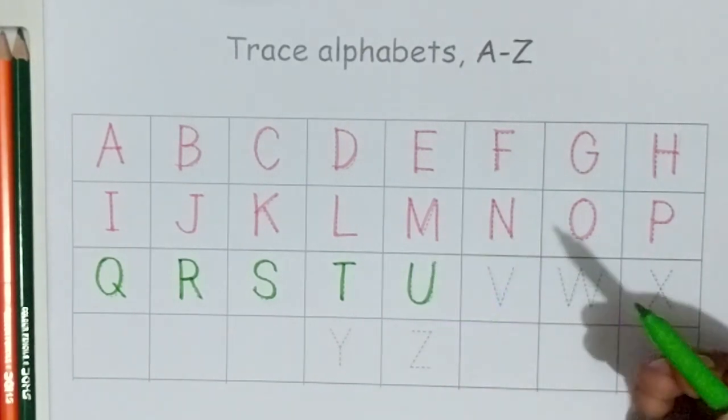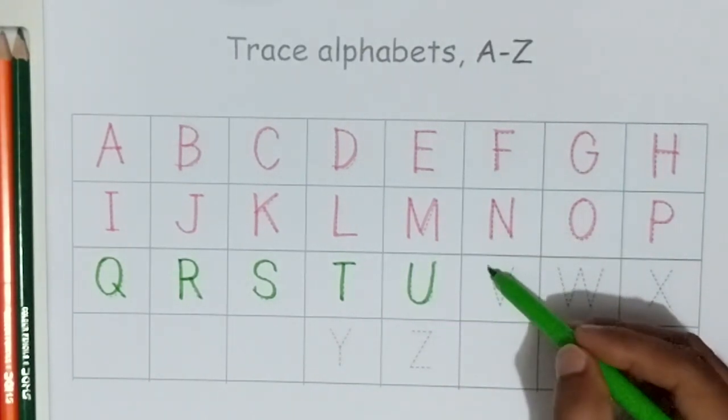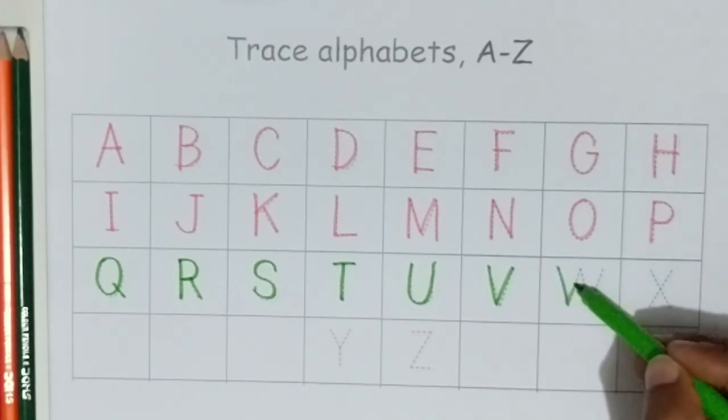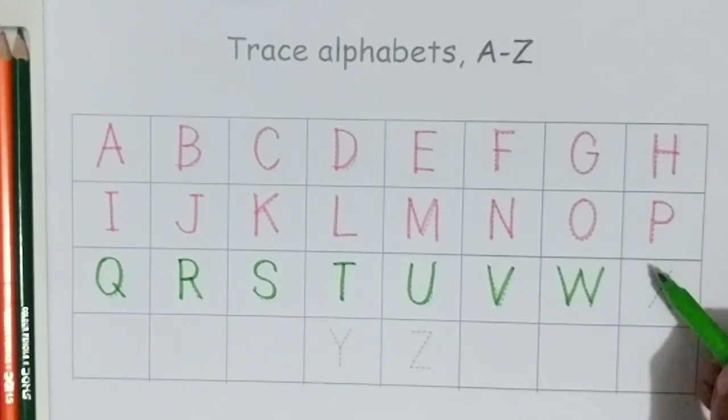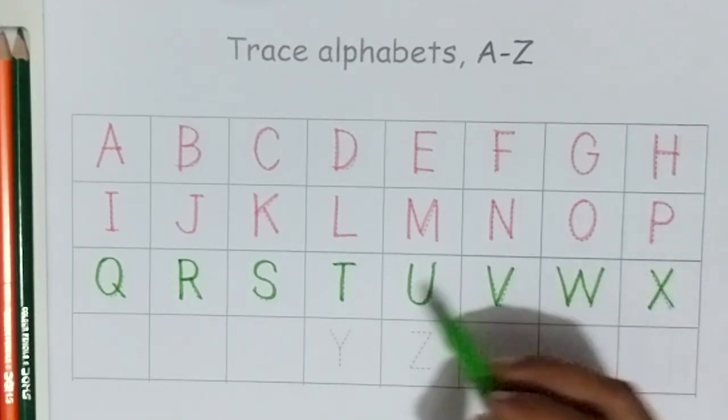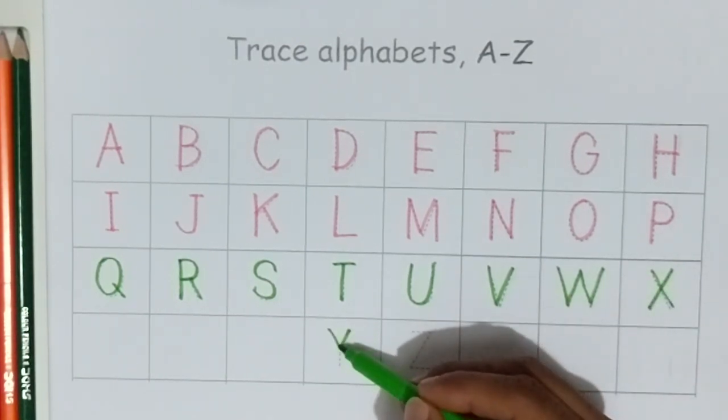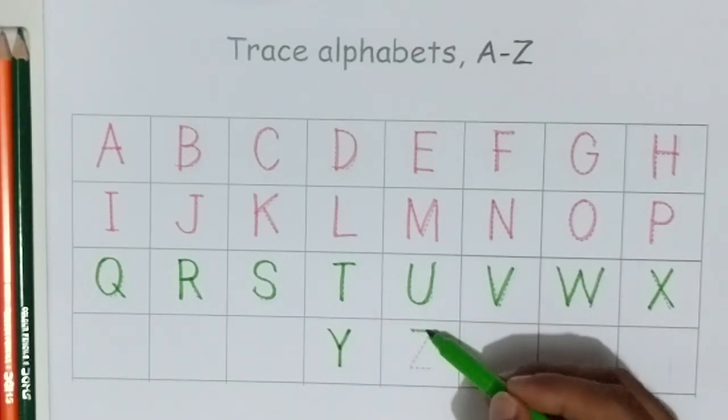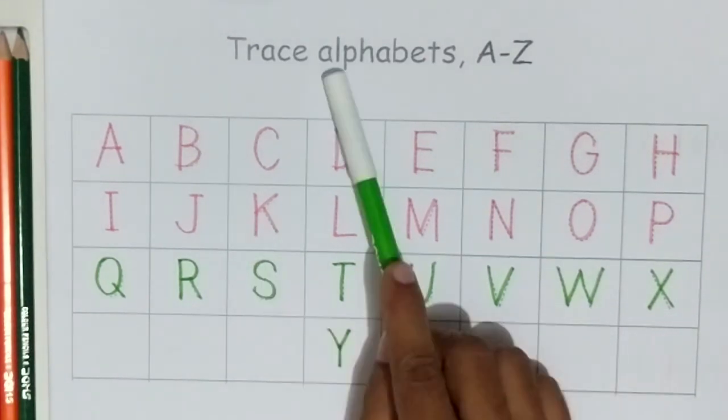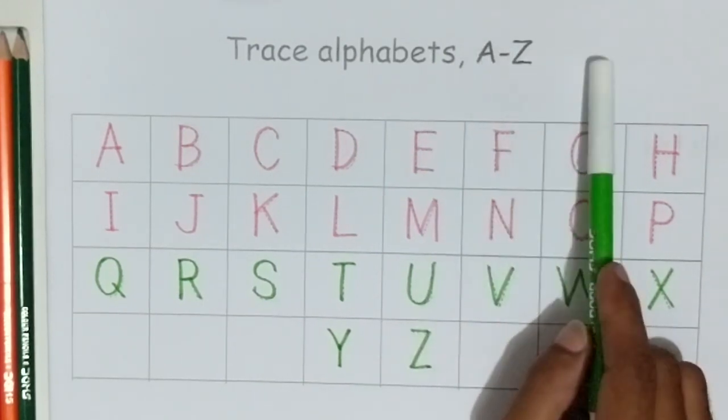U. U for umbrella. V. V for victory. W. W for water. X. X for x-ray. Y. Y for yellow. Z. Z for zipper. Z for zero. Press alphabets A to Z.